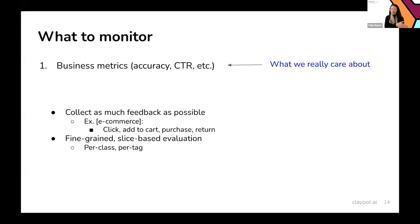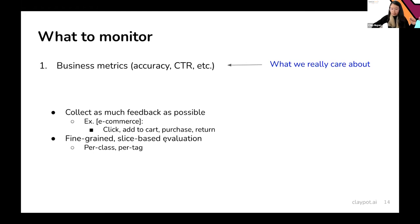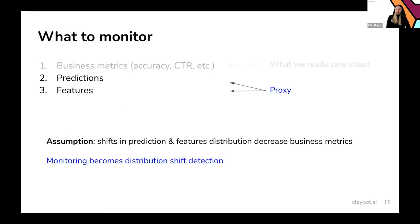Another thing when monitoring business metrics is that coarse-grained evaluation isn't good enough. Overall metrics like accuracy or F1 on all data won't cut it — you want to know how a model performs on different subsets of data and demographics. If performance drops for a subgroup of users, there might be something interesting happening, potentially something bad like biases in the pipeline. Due to the lack of labels, many monitoring tools turn to proxies like predictions and features, assuming that shifts in these distributions will lead to decreased business metrics.